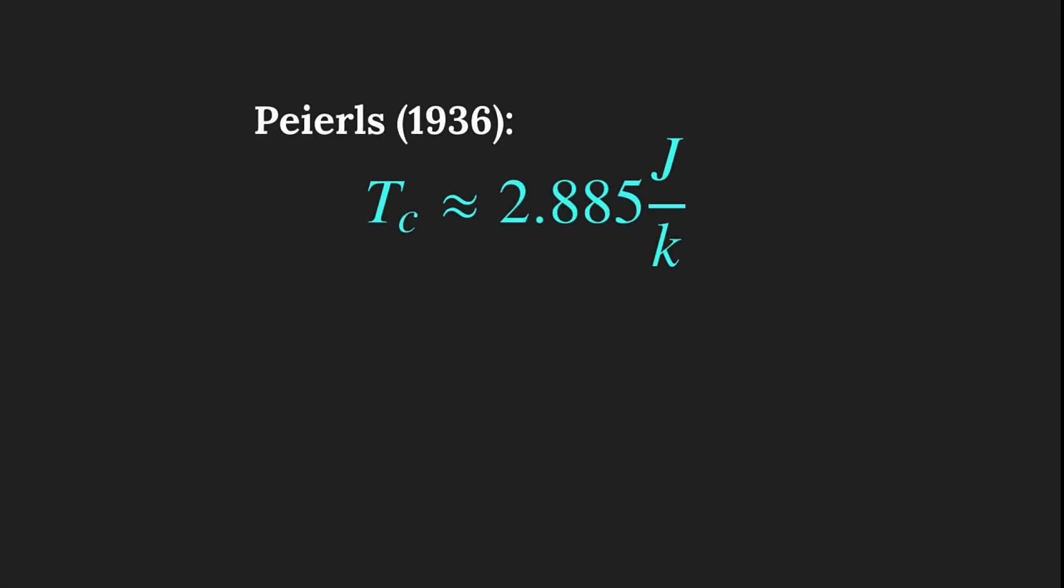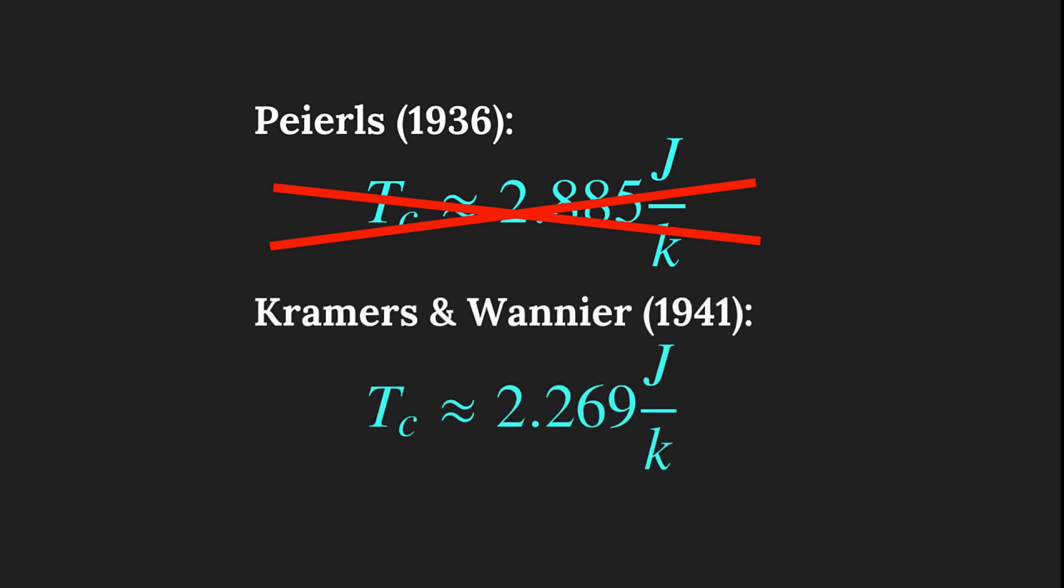Unfortunately for Peirels, this result is close, but not quite the right answer. Only five years later, Cramers and Vanier calculated the critical temperature of the 2D Ising model to in fact be 2.269 J over K. This is what Mikey will show us in the rest of the video by exploring self-duality.